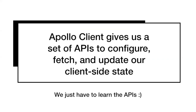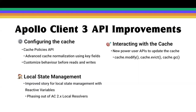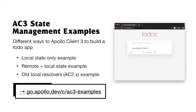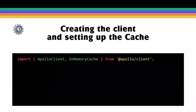In Apollo Client 3 we've introduced a bunch of improvements to each part of the library. The rest of this talk will be based on a simple to-do app I've put together on GitHub. It shows how to use the new AC3 features and how to build different versions of a to-do app using local state, remote state, and even the old local resolvers approach, which will still also work. Here's how we might set up the client and the cache.